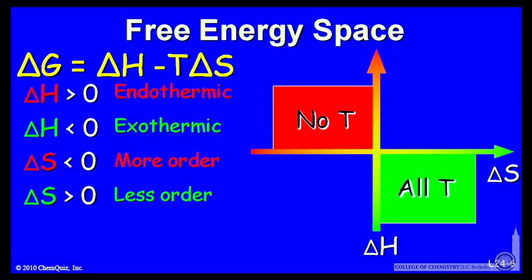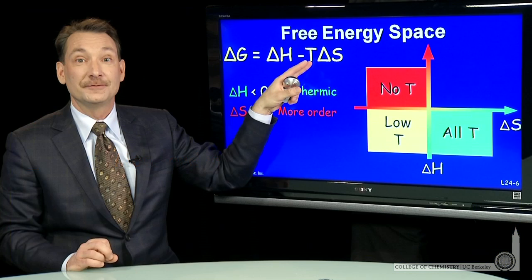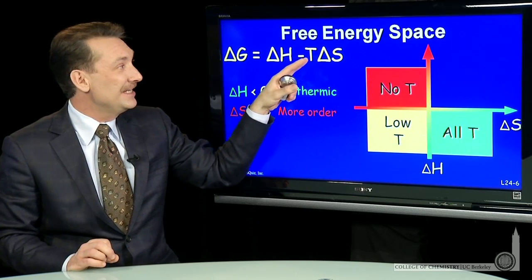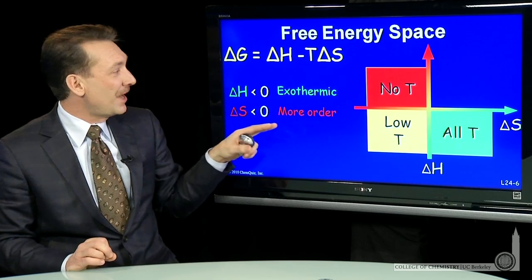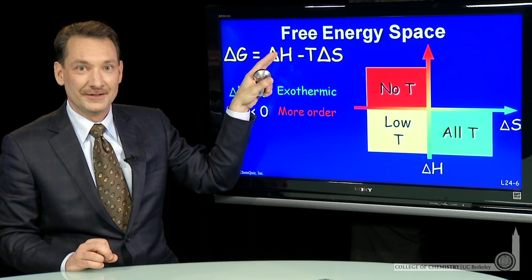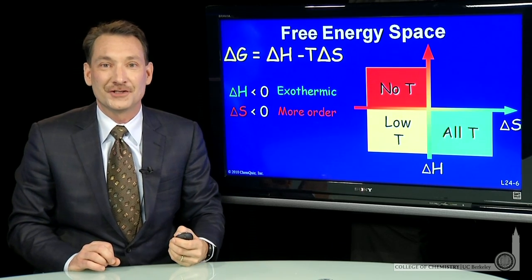We can look at the other two quadrants. Reactions where delta H is negative and delta S is negative will happen only if T is small. You have to have a small entropic term, T times delta S. This has to be small and positive to be smaller than the negative delta H to give you an overall negative delta G.